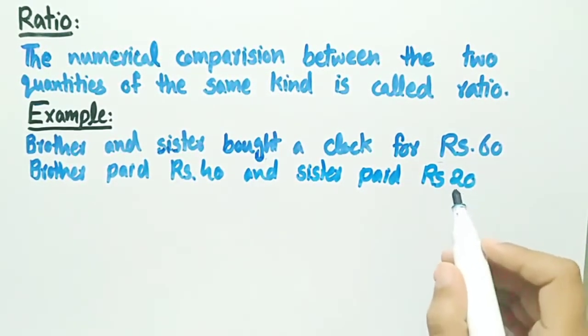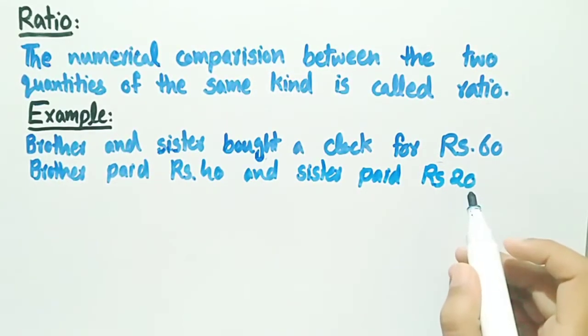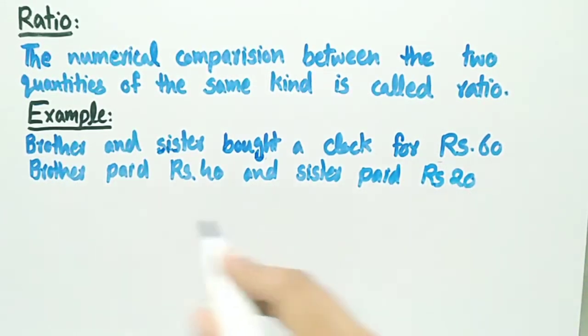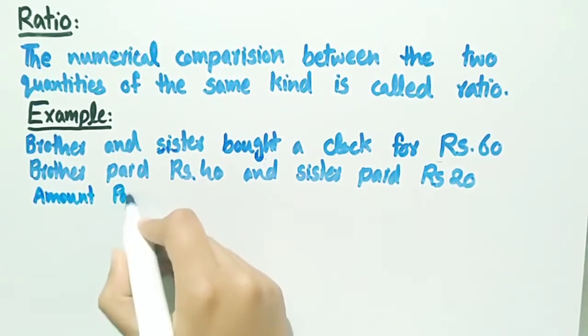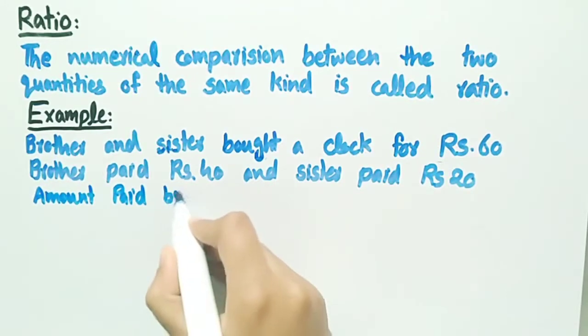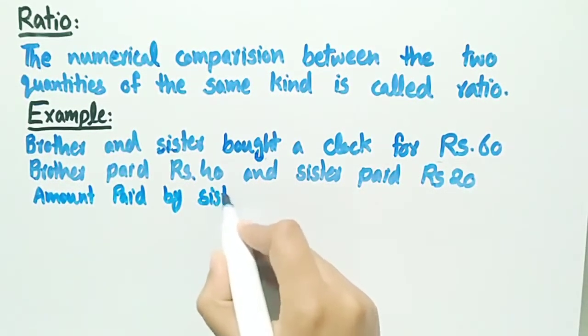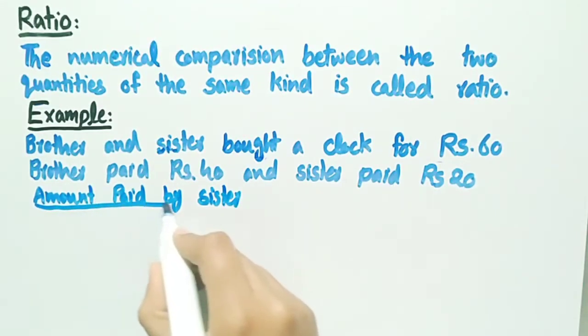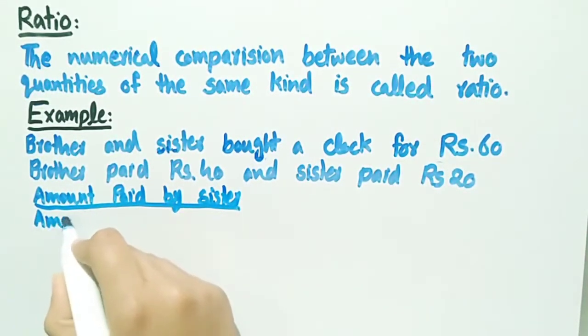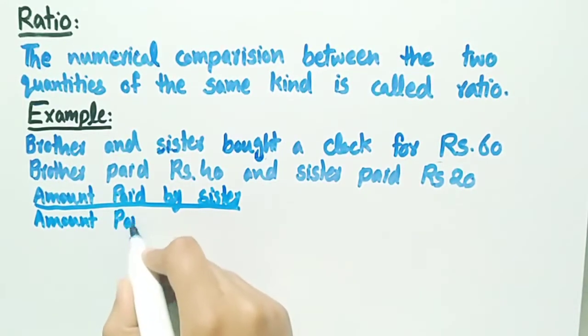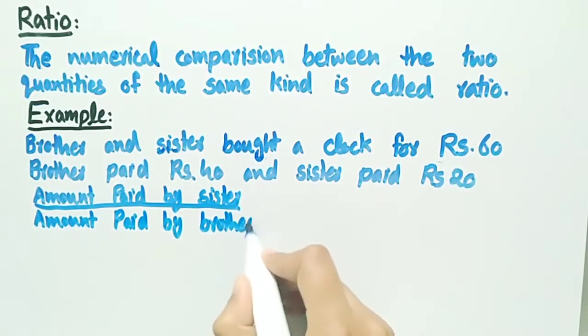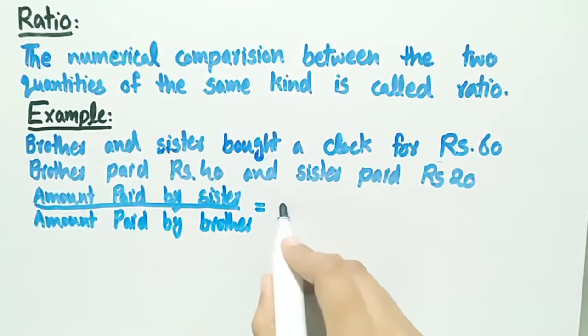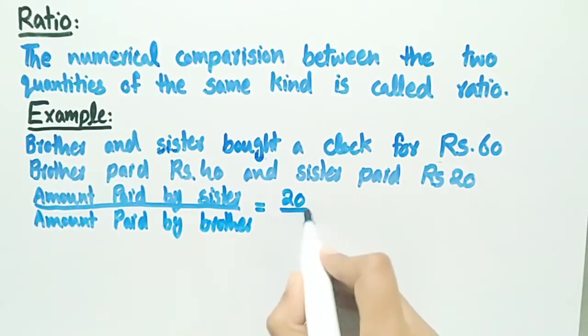Now, we can compare the amounts paid by sister and brother to find the relation between the two amounts by writing them into a fraction. So, we write them as amount paid by sister divided by amount paid by brother, which is equal to 20 divided by 40.